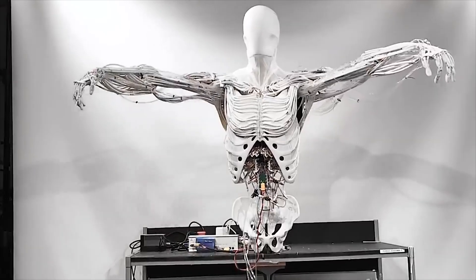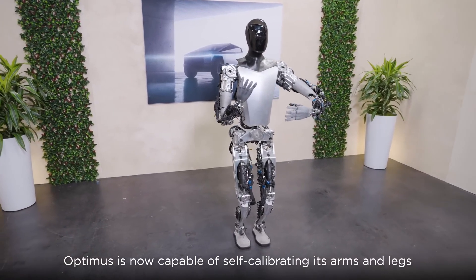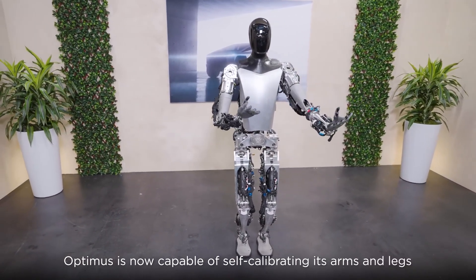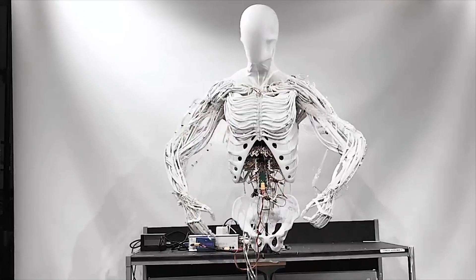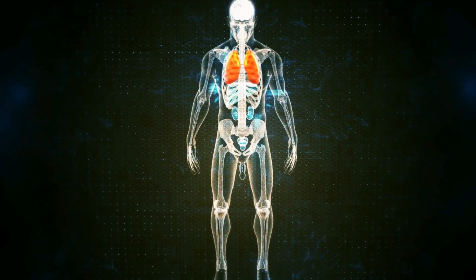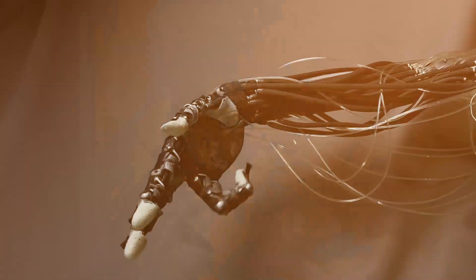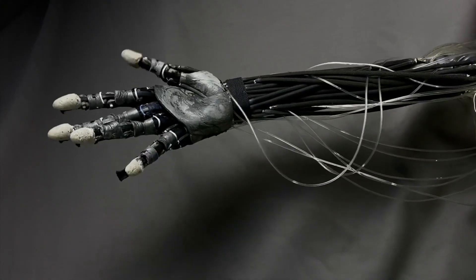Let's break down what makes this creation so special. Unlike traditional robots that rely on servos and conventional actuators, the Torso uses artificial muscles that mirror human biology. It's like they've taken the blueprint of human anatomy and translated it into mechanical form, but with a twist that makes it uniquely advanced.